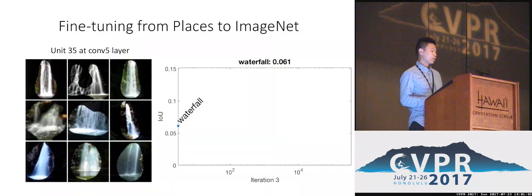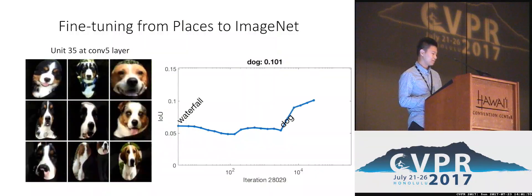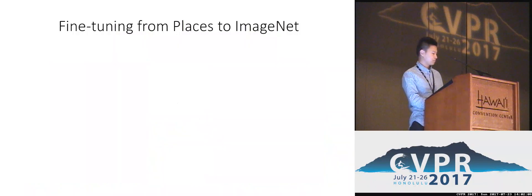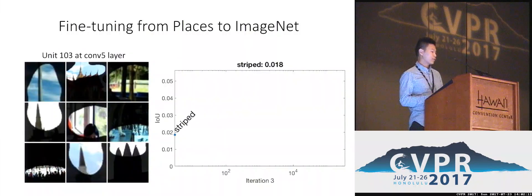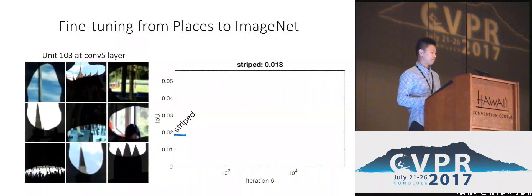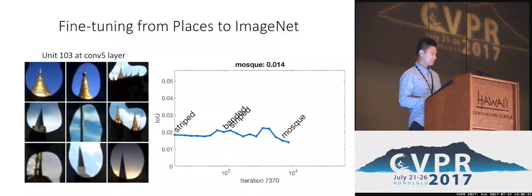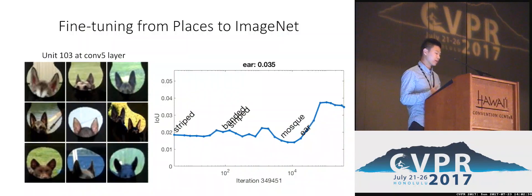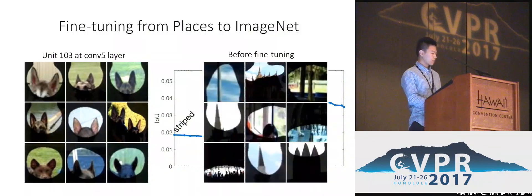We also do the reverse: starting with AlexNet trained on Places, then fine-tuning to ImageNet. Units that were detecting waterfalls gradually change into dog detectors, because there are so many dog categories in ImageNet. Similarly, a stripe detector converges to a dog ear detector after fine-tuning to ImageNet, because those units need to spend their capacity representing parts of a dog. These concepts share geometric similarity at the low level.